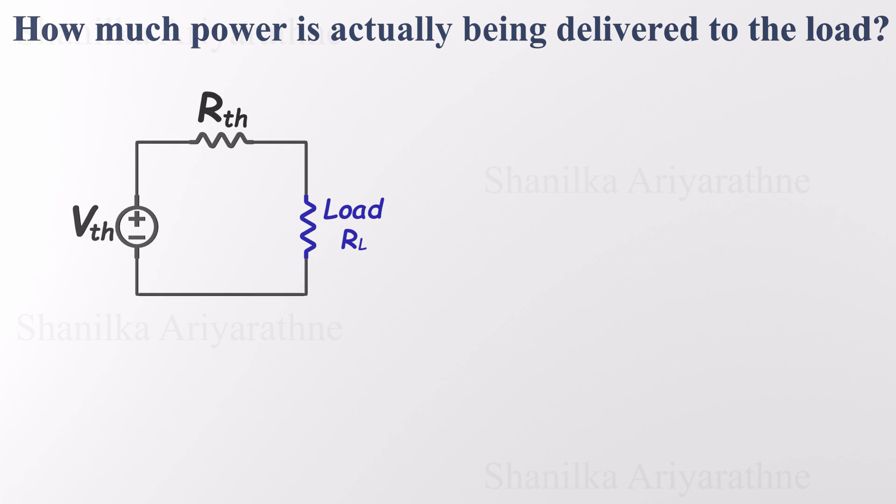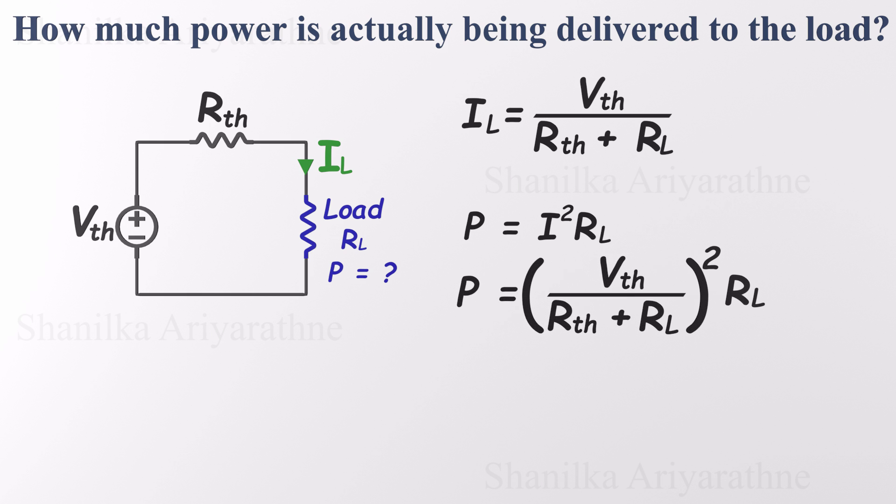One of the most important questions when designing any circuit is: how much power is actually delivered to the load? Let's take this Thevenin equivalent circuit as an example. We can calculate the current through the load using Ohm's law: IL equals VTH divided by RTH plus RL. Now, to find the power consumed by the load, we use P equals I squared times R. Substituting our expression for IL into the power equation, we get an expression for the power.